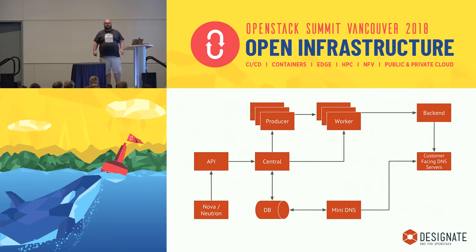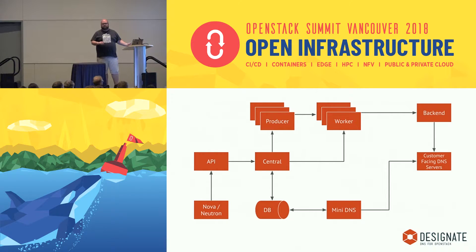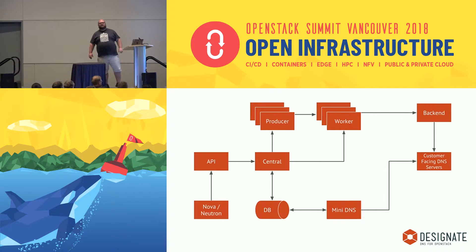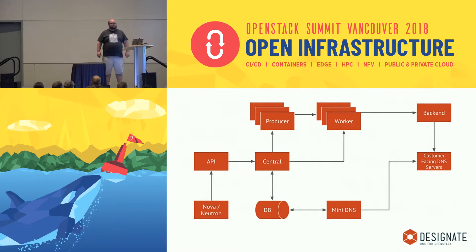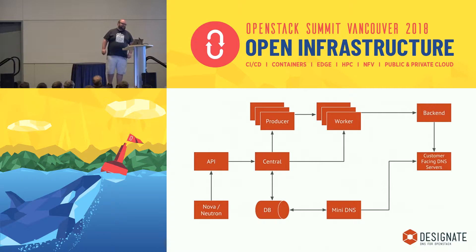These DNS servers receive DNS information sent in the DNS standard format. We use zone transfers to send the DNS information from Designate to the DNS servers — that's what the mini DNS server is. It's a small, lightweight DNS server written in Python. Under no circumstances should you expose it on the internet — I did it by accident a couple of weeks ago in one of my test clusters and it didn't go very well. All it does is call the database, get a list of all the records, create a zone transfer dump, and send it to the DNS servers.